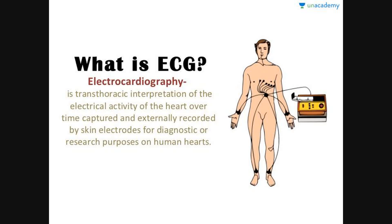ECG is a diagnostic and research purpose test which is done on human subjects. It records the electrical activity of the heart, and you can see that the electrodes are placed over the skin and used for diagnostic and research purposes. Now the machine through which we record the ECG is known as the electrocardiograph, while the recording of that machine is known as the electrocardiogram. There is a difference between 'gram' and 'graph'.